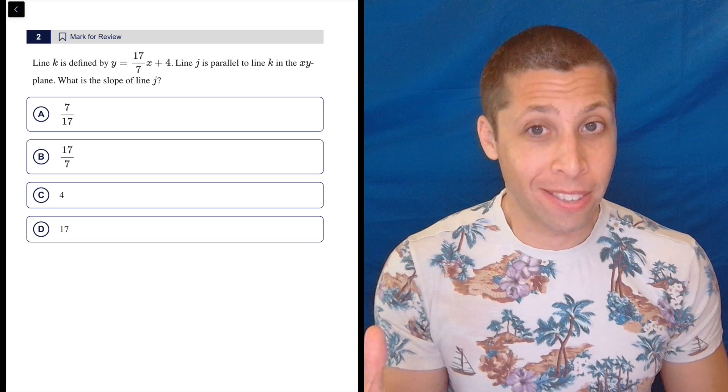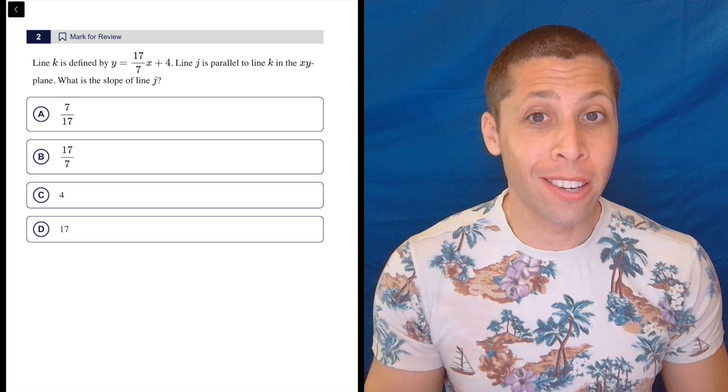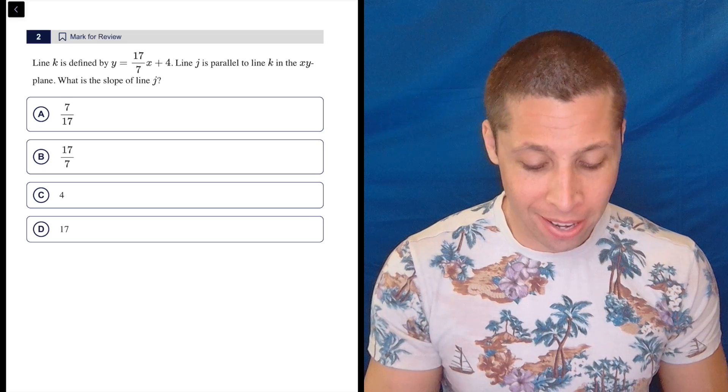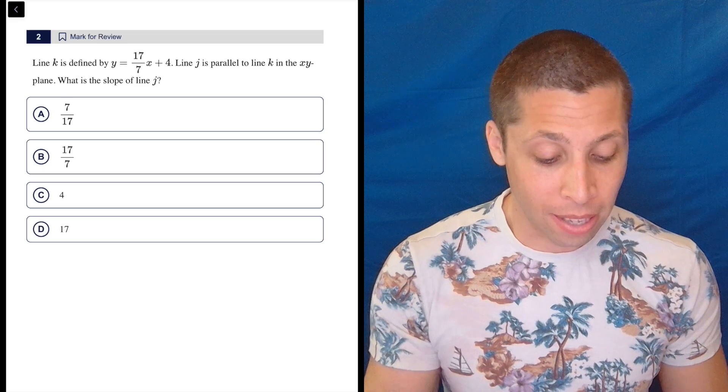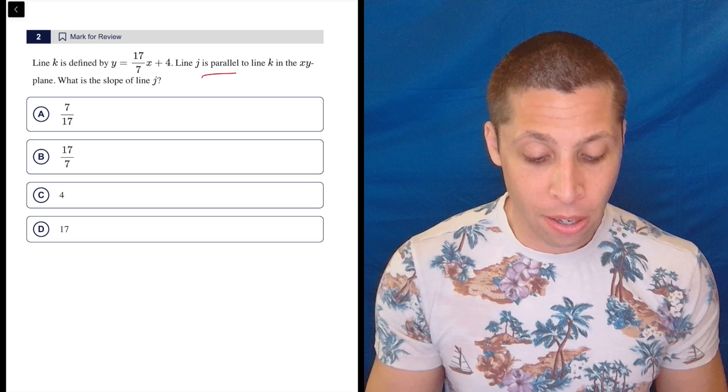Are you taking 20, 30, 40 seconds to understand what's going on, or do you just know the answer right away? Line k is defined by this. Line j is parallel to line k. What is the slope of line j?